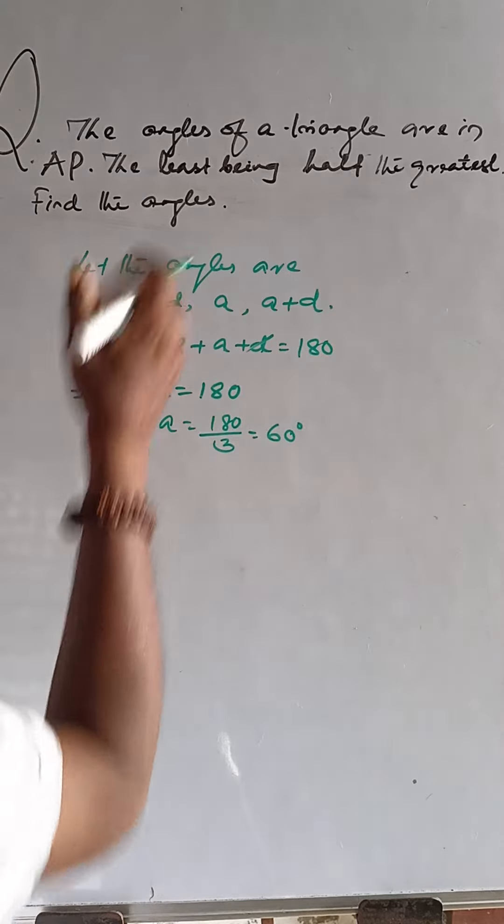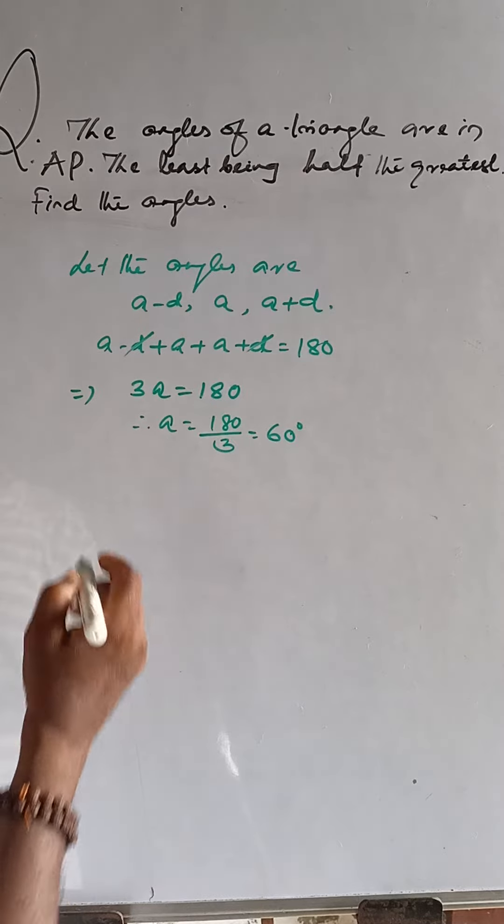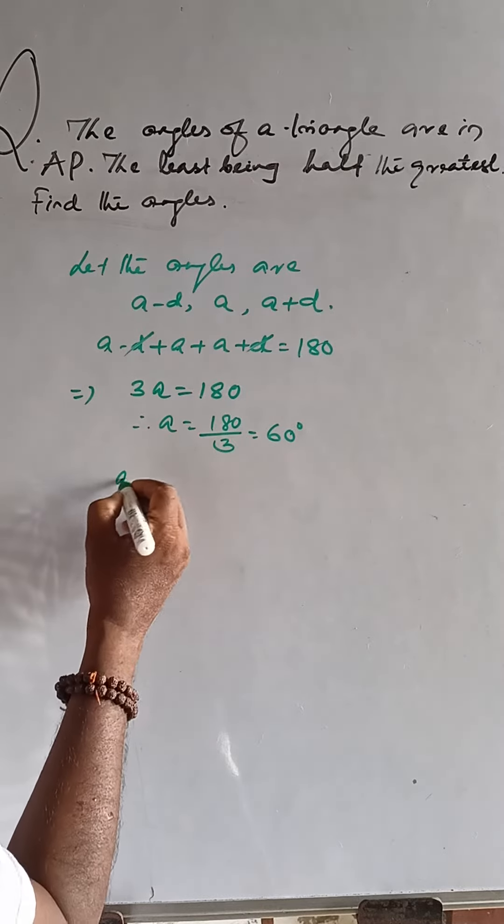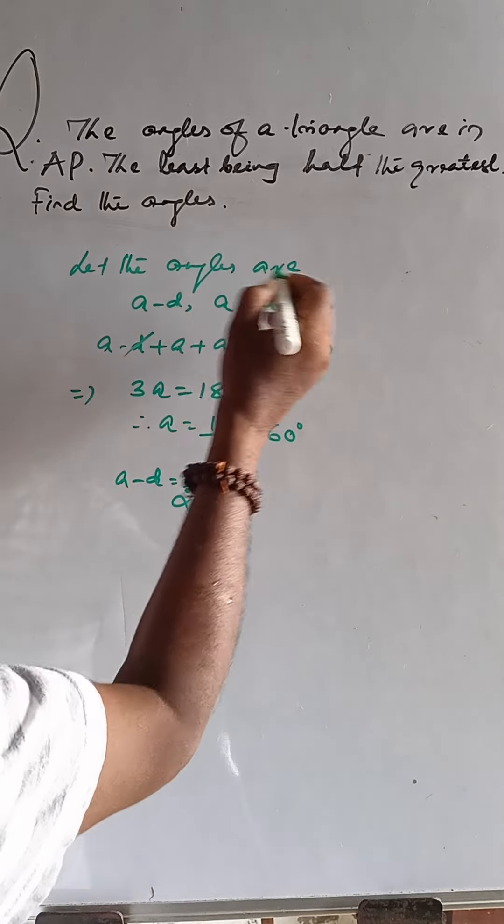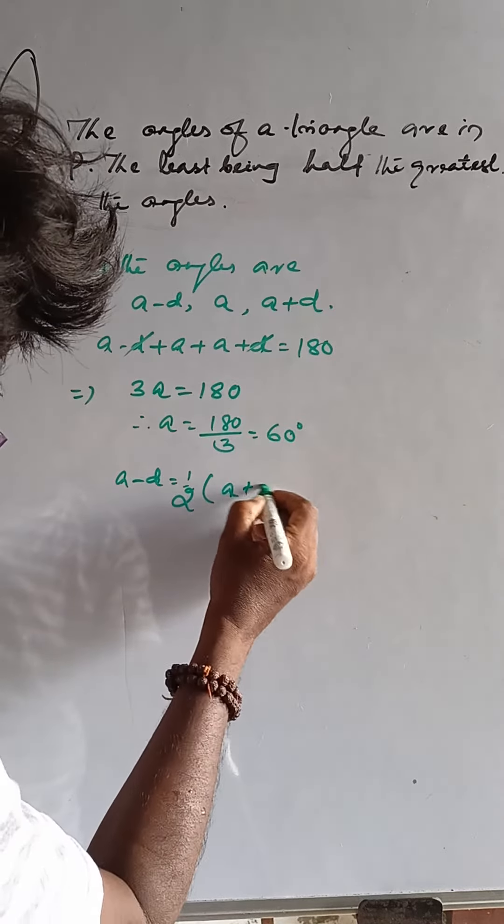From the statement, the least being half the greatest, that means the least A minus D is equal to half of the greatest, which is A plus D.